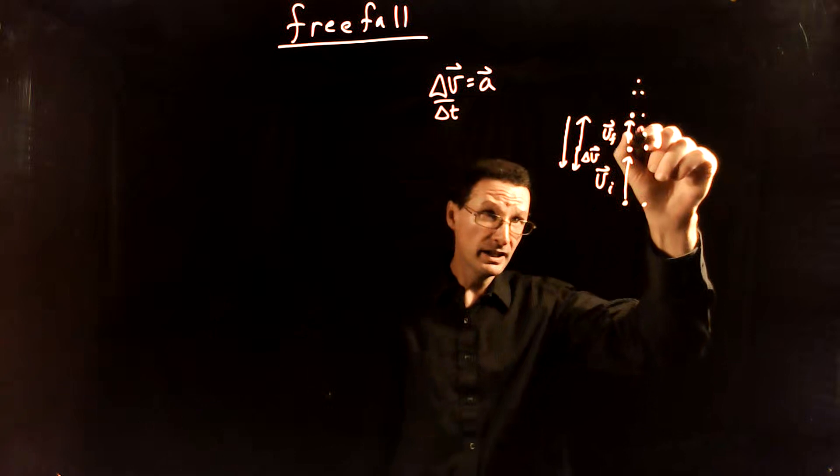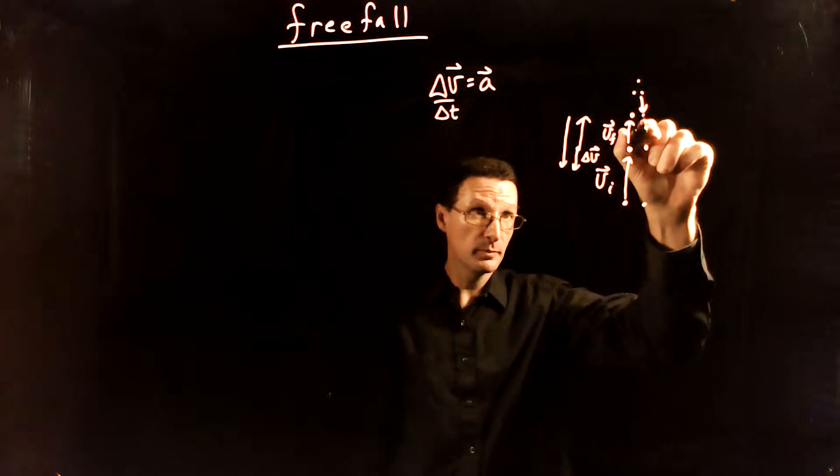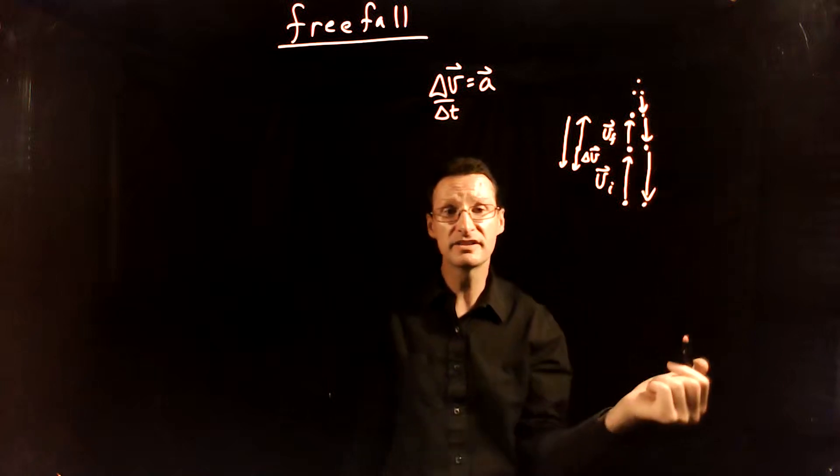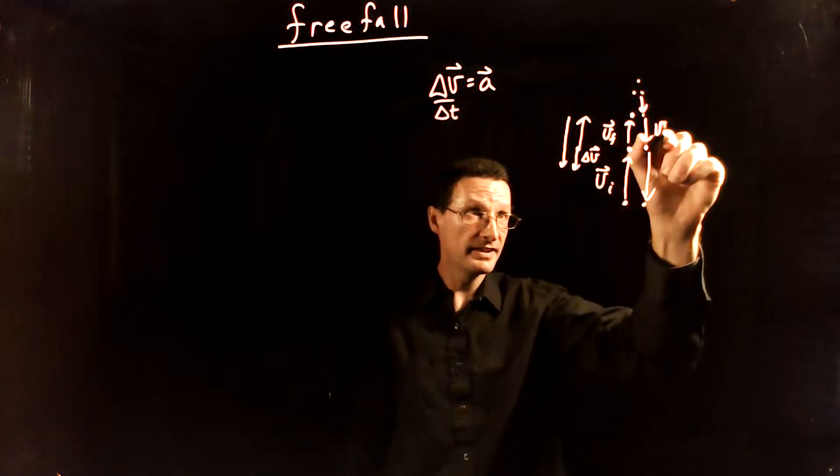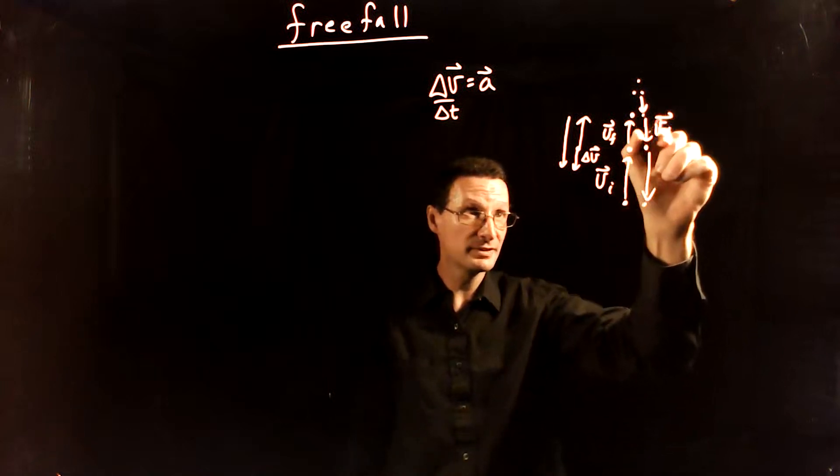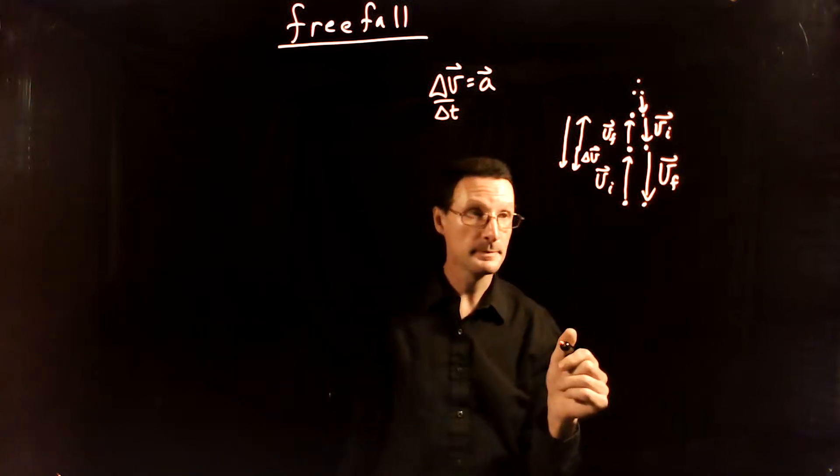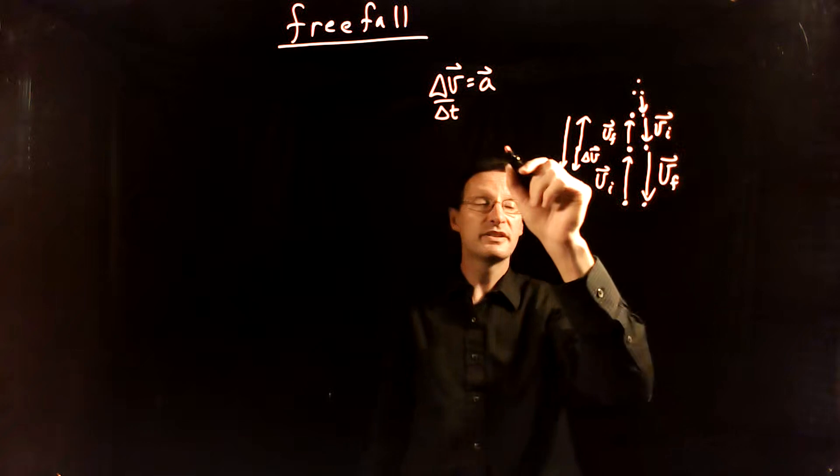On the way down, the velocity vectors of course are pointing down and they're increasing. So we can do the same sort of analysis here. At this point though, the initial velocity would be there and then the final velocity would be there.